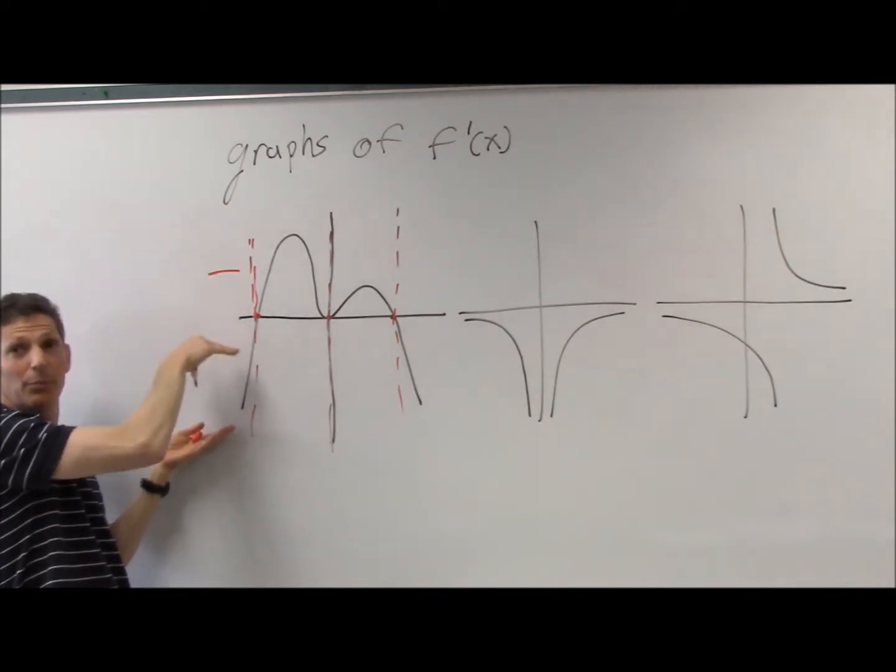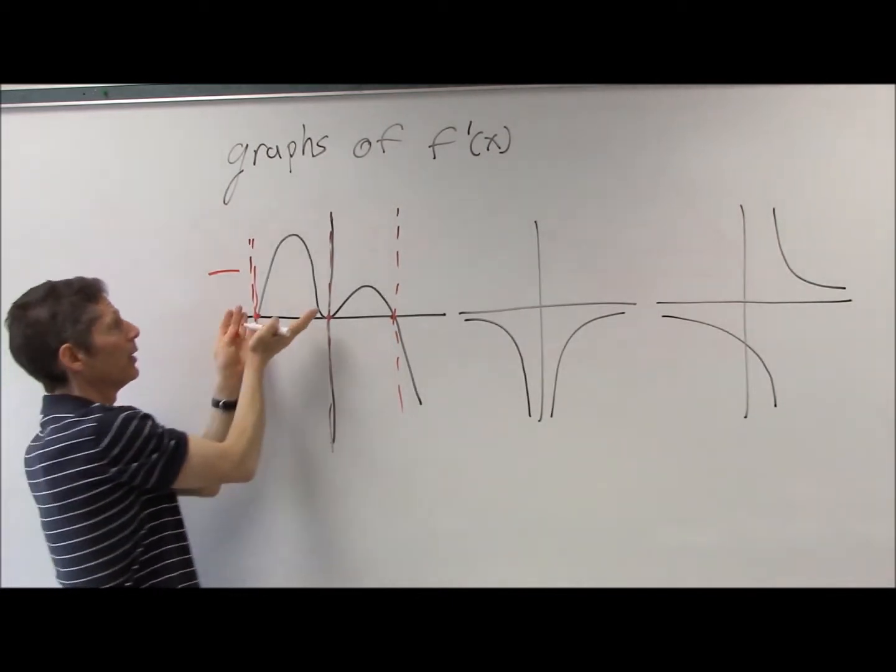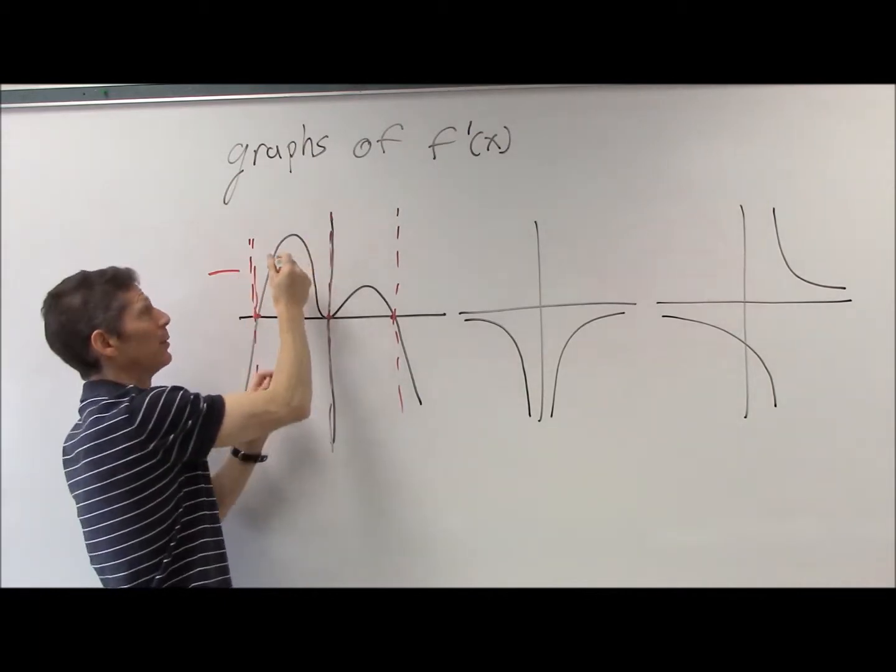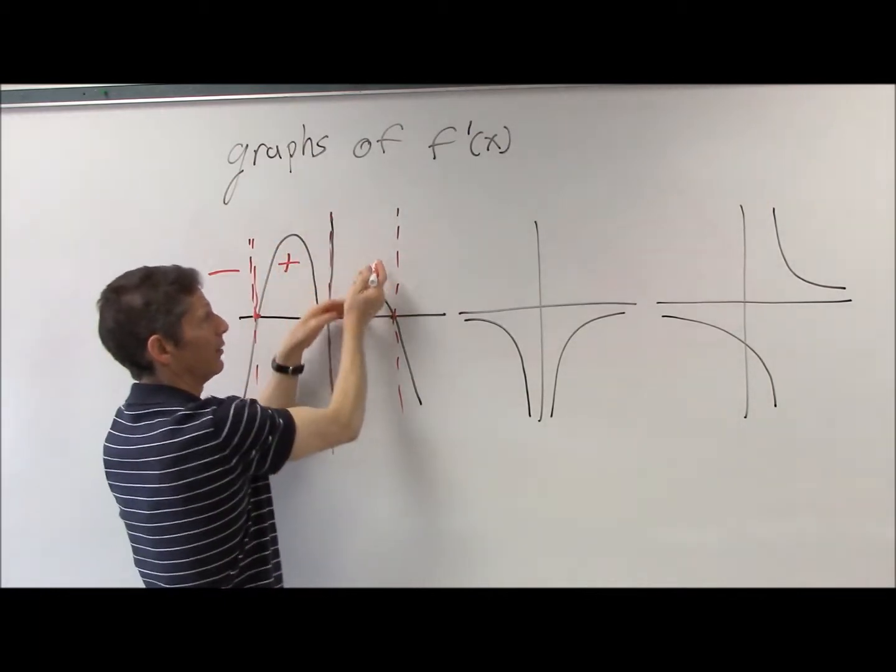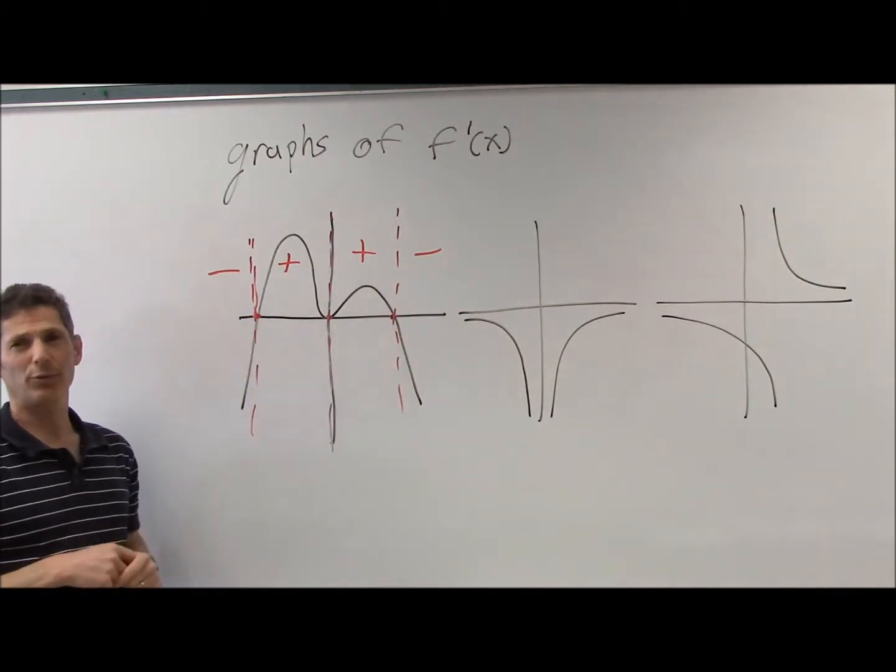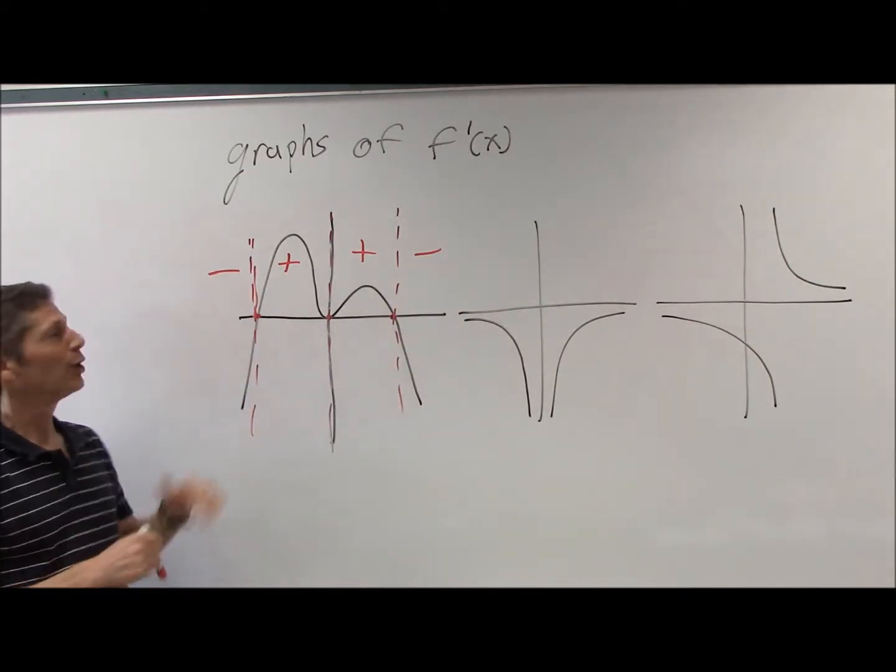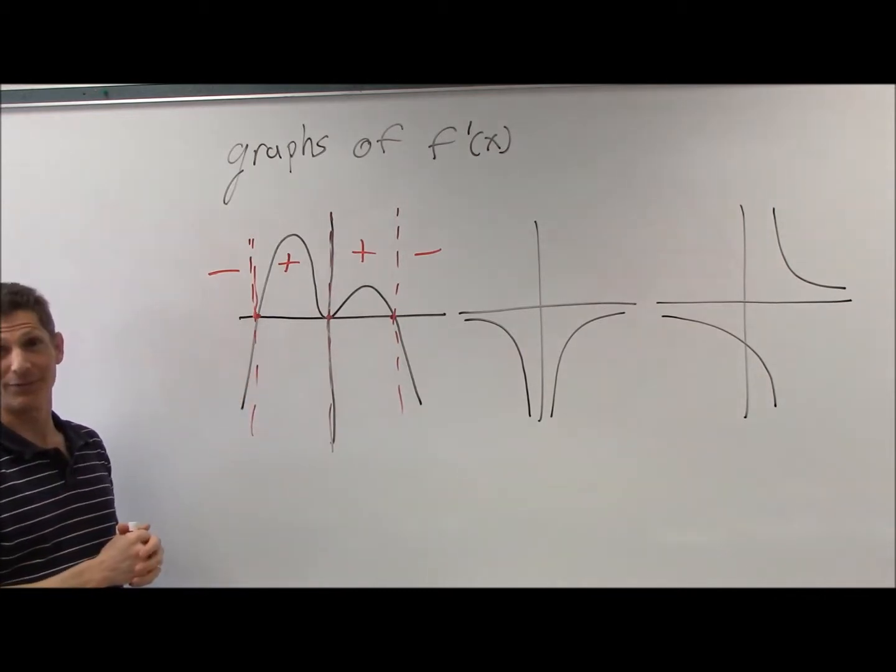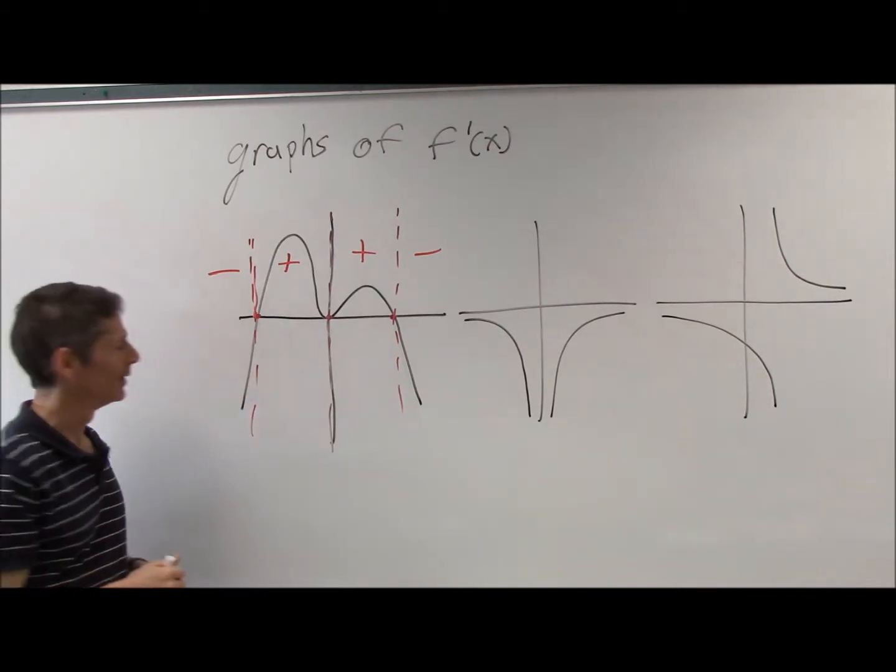Here the y-value is negative, I'm below the x-axis. Here the y-value is positive, I'm above the x-axis. Positive again, then negative. Sometimes students look at the slope of the derivative. Don't do that. Look at the y-value of the derivative. Stop looking at the slope.